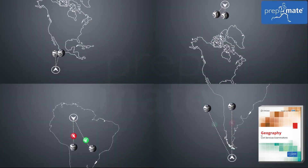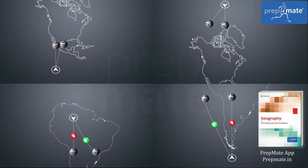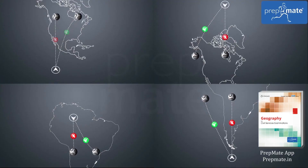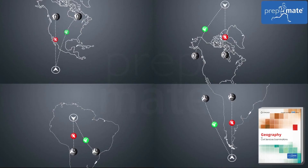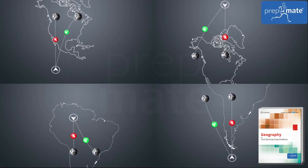Variation of Coriolis force on different points on Earth. Coriolis force is minimal at the equator, and thus there is minimum apparent deflection of fluids like winds and water. On the other hand, it is maximum at the poles, where there is maximum deflection.